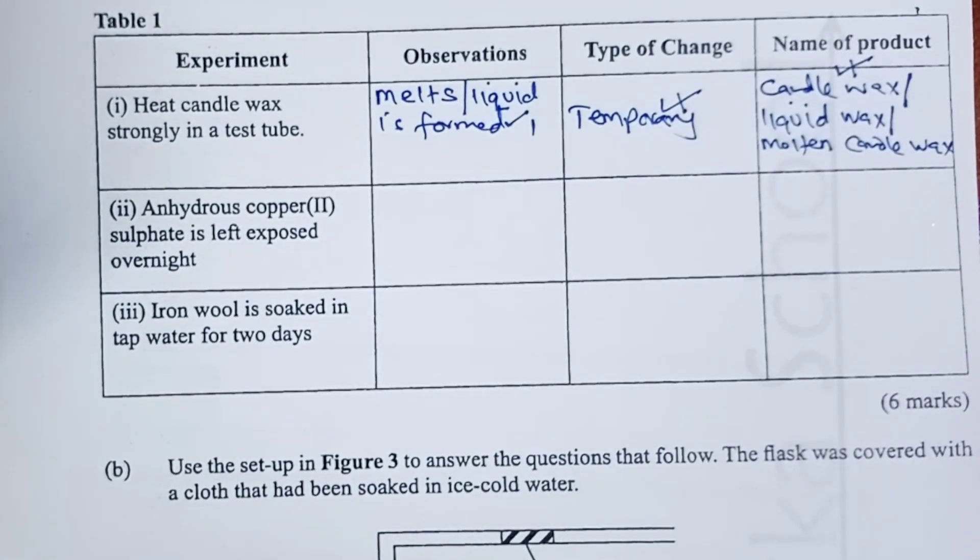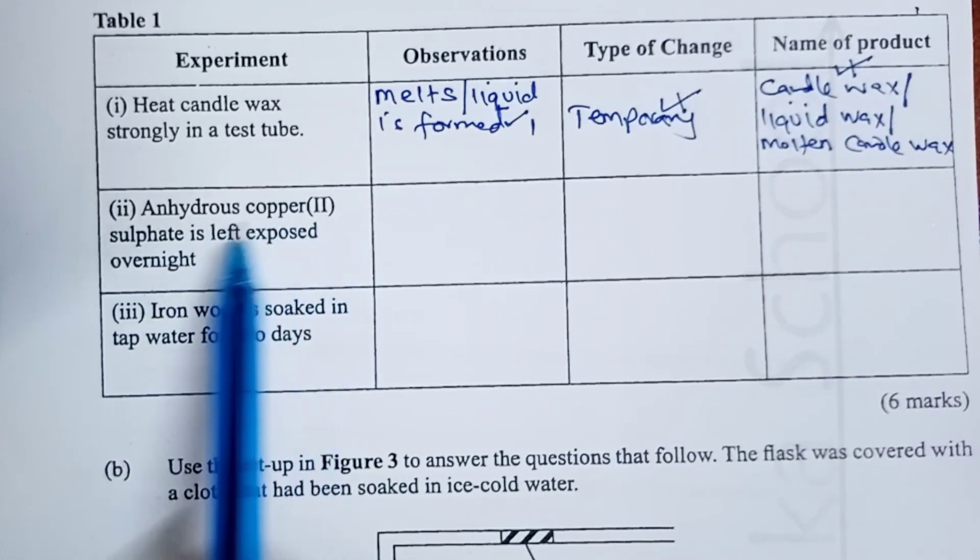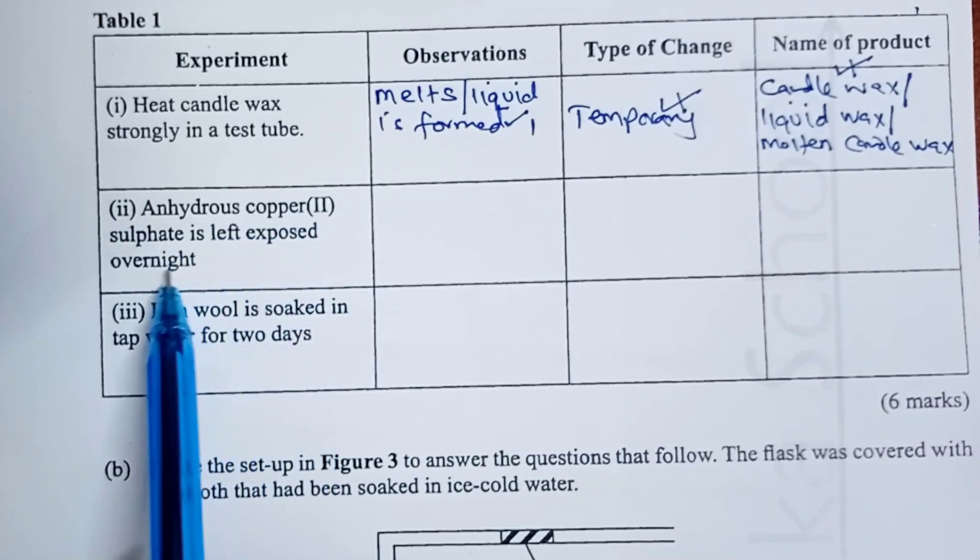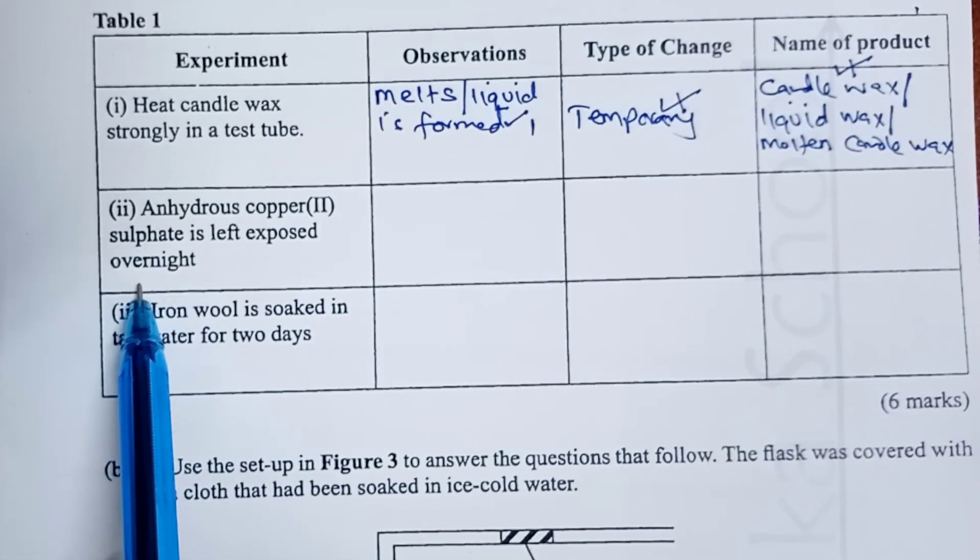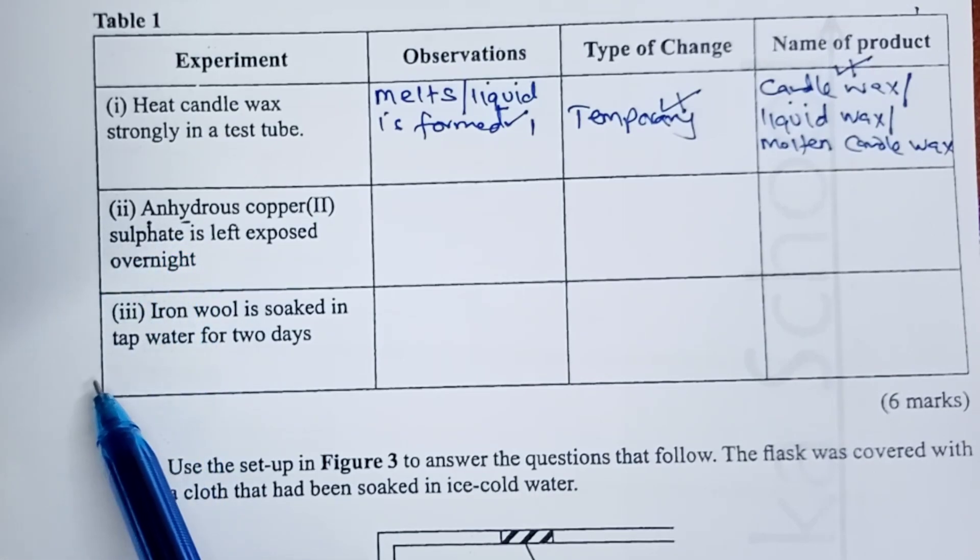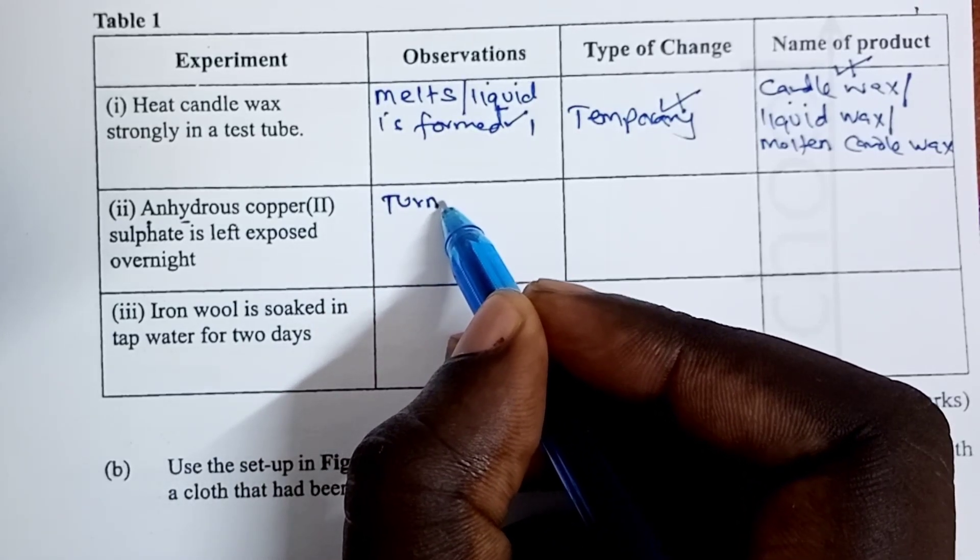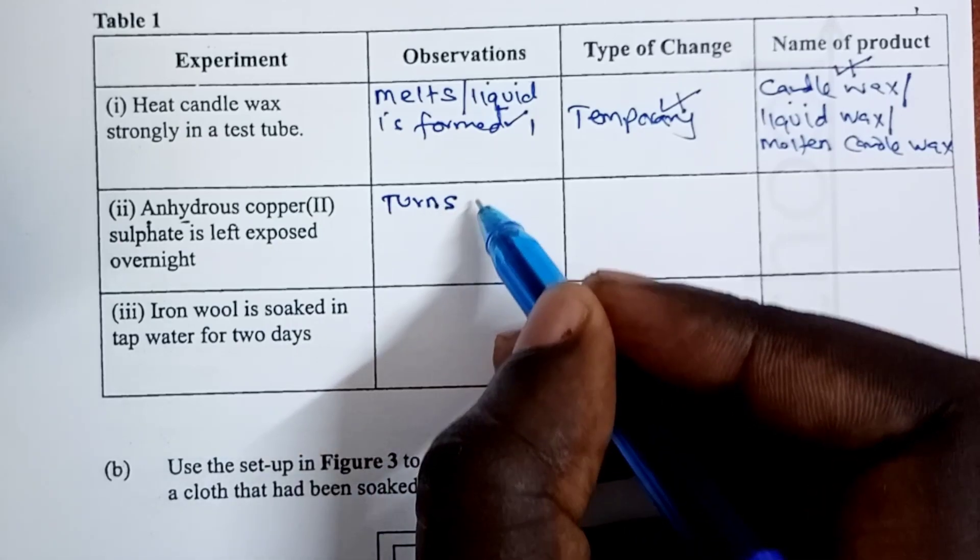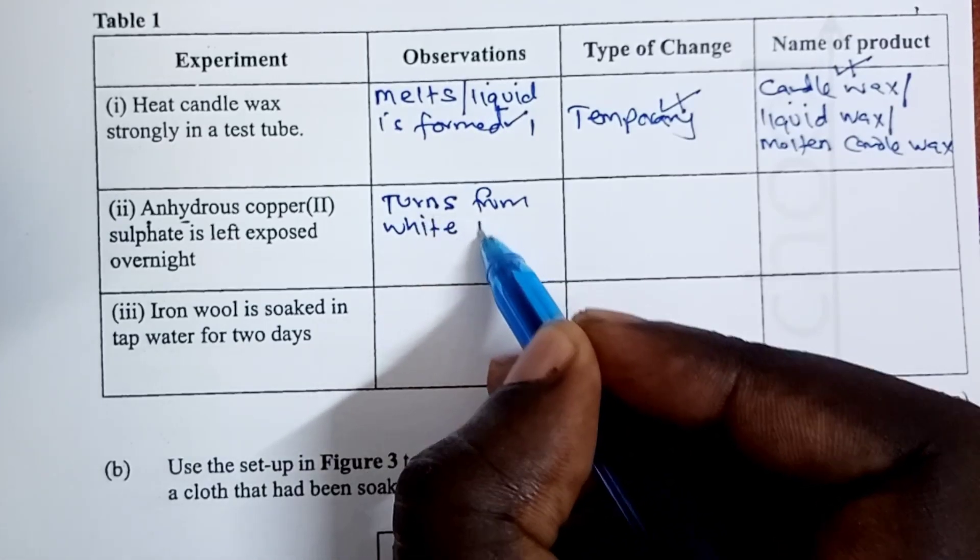Moving on, we have the experiment being anhydrous copper-2 sulfate is left exposed overnight. This is a salt that is able to actually get some moisture from the atmosphere to become hydrated from anhydrous.